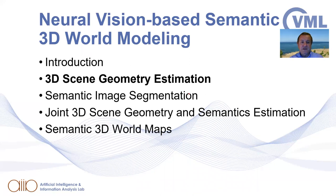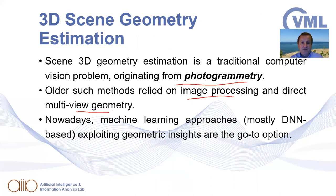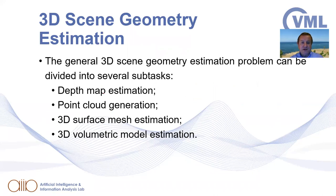Starting with 3D scene geometry estimation based on neural techniques: 3D geometry estimation is a traditional technique that stems from photogrammetry, which relies heavily on image analysis and multi-view geometry. Nowadays we use DNNs to calculate disparity or depth information. Typical sub-tasks include estimating disparity and depth maps, creating 3D point clouds, representing surfaces using 3D meshes such as triangular meshes, or using volumetric models such as octomaps based on octrees.